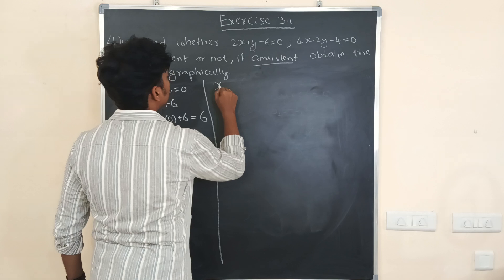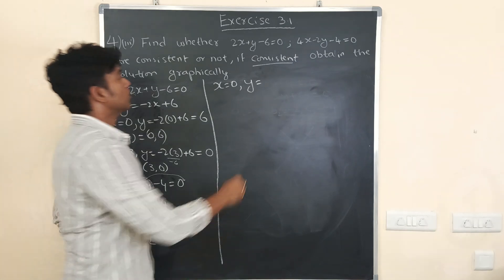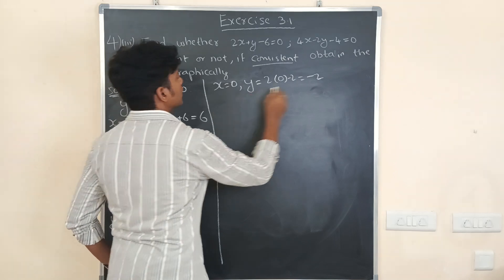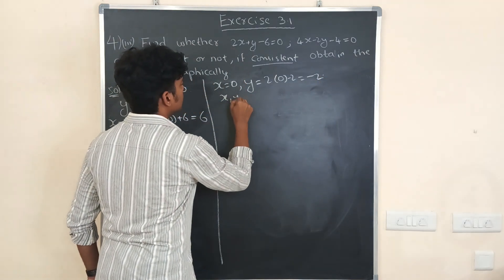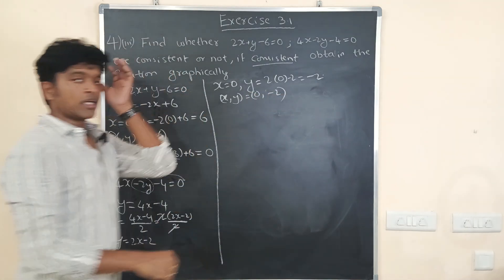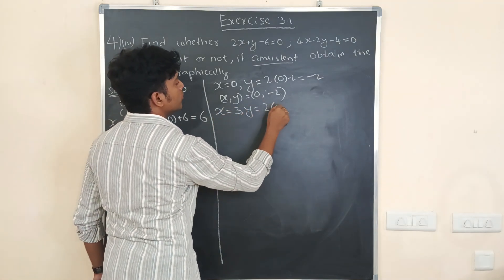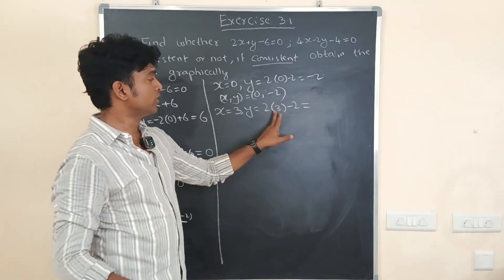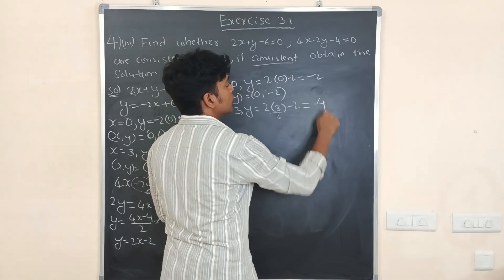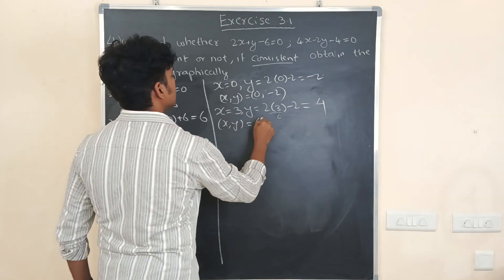So for the second equation, when x = 0, the coordinate is (0, -2). Now again, if x = 3, then y = 2(3) - 2 = 6 - 2 = 4. So the coordinate is (3, 4). We have to find the solution using the graphical method.